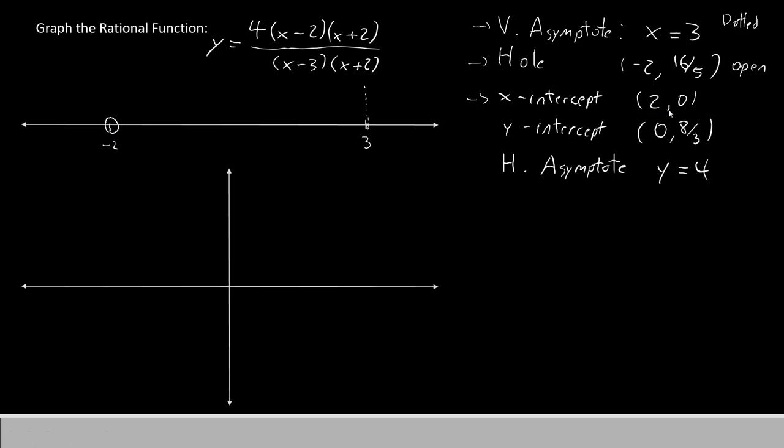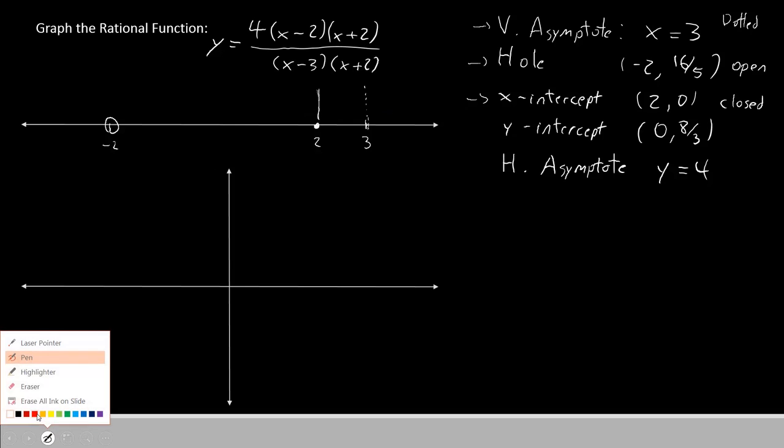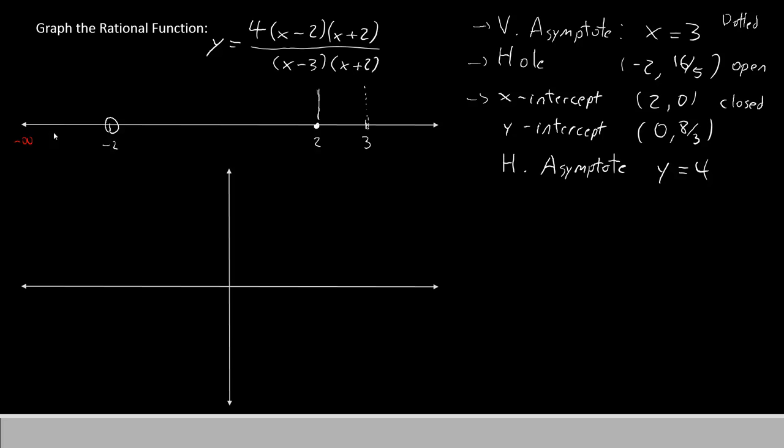Draw an open circle right there. I also have my x-intercept, which is 2 comma 0. So we'll go over here to where 2 would be. And this is going to be a closed dot right here at 2. I'll also draw a solid line here. And here's why. The vertical asymptote and the x-intercept are going to break this graph into sections. We'll call the first section, which is everything from negative infinity to 2, section A. Between 2 and 3, we'll have section B. And from 3 to positive infinity, we'll have section C. I'll also place my y-intercept on the number line right here at 0. I'll just leave a note that that is 0 comma 8 thirds as my point here.